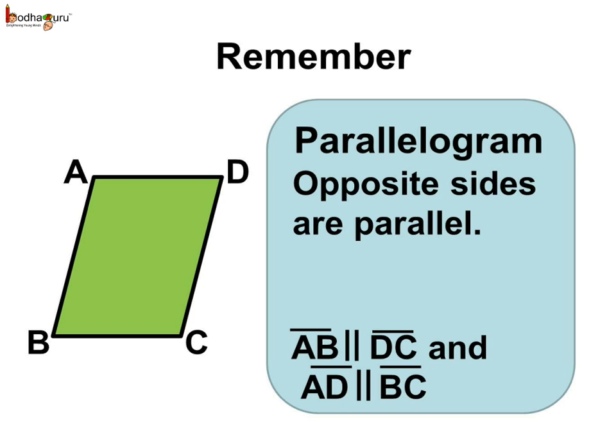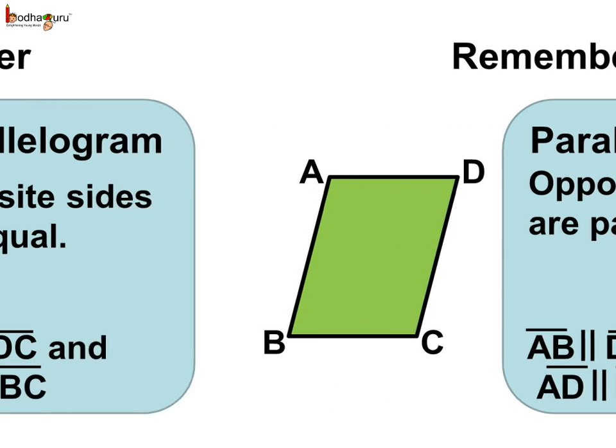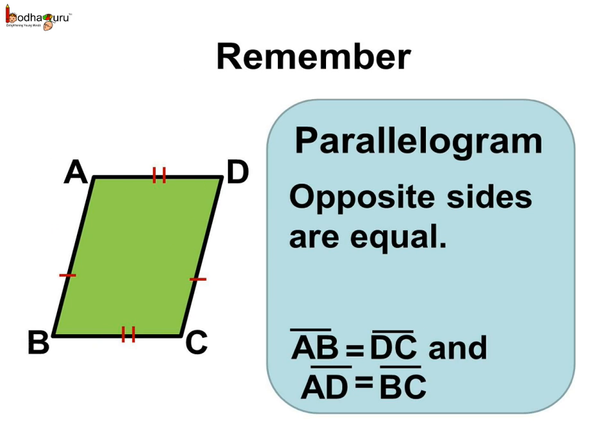Remember children: a parallelogram has opposite sides that are parallel — AB is parallel to DC and AD is parallel to BC. Not just parallel, the opposite sides are equal as well. Hence line segment AB equals line segment DC, and line segment AD equals line segment BC.